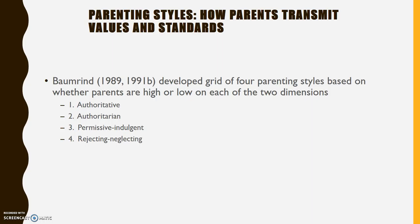Different types of parenting styles have been defined, and Baumrind has focused on these child-rearing or parenting styles — how we transmit what's important, our standards, and our expectations to our children. She used the warmth/coldness and restrictive/permissive dimensions to develop four kinds of parenting, where styles are high and low on each of the two dimensions. Authoritative parents are going to be high in restrictiveness and high on warmth and responsiveness.